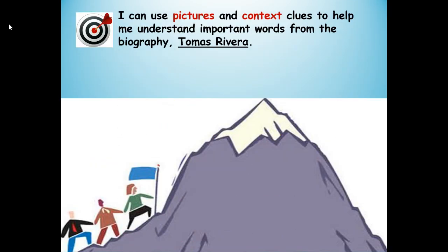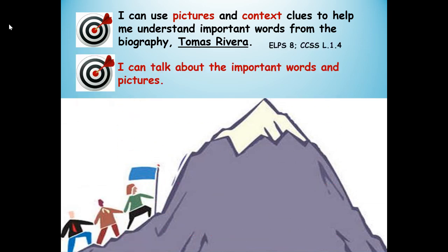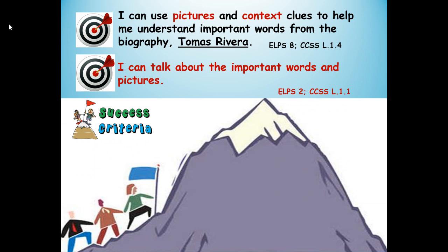Here are our learning targets. I can use pictures and context clues to help me understand important words from the biography Tomas Rivera. Our other learning target is: I can talk about the important words and pictures. Success criteria means how will you know you're successful at using pictures and context clues to understand important words from the biography, and how will you know you're successful at talking about the important words and pictures?